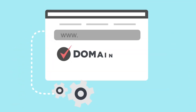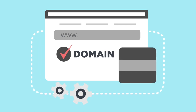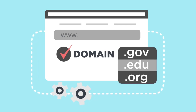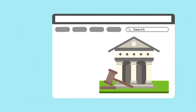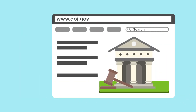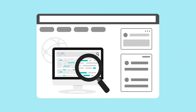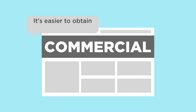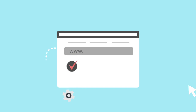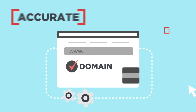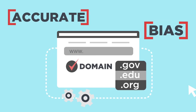Next, check the domain. The type of domain a website is hosted on can tell you a bit about the type of content you're viewing. Websites ending in .gov are typically official government websites. Websites ending in .edu are typically published by educational institutions. And websites ending in .org are organizations. It's easier to obtain a .com domain name, which is used for commercial websites. Based on the domain type, you can judge how accurate or biased the content might be.